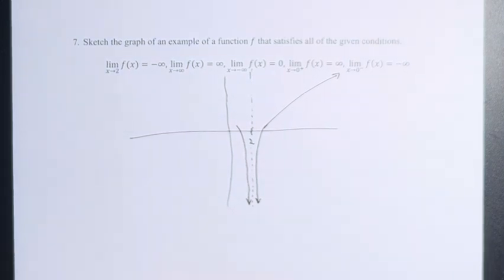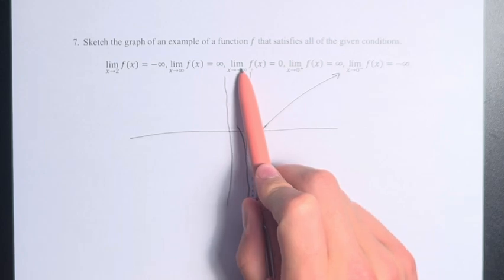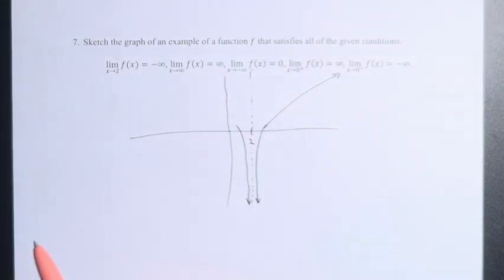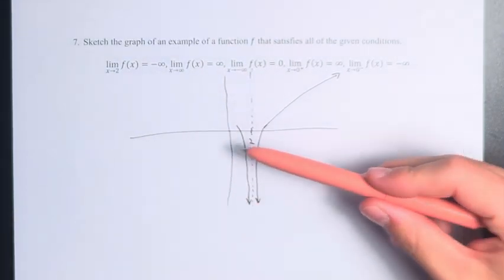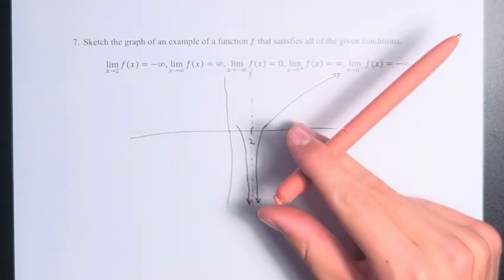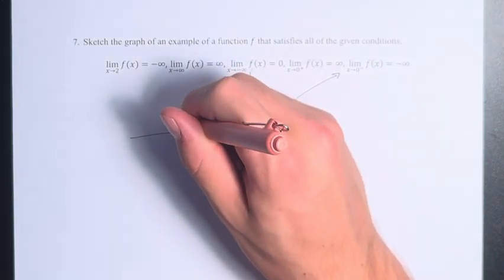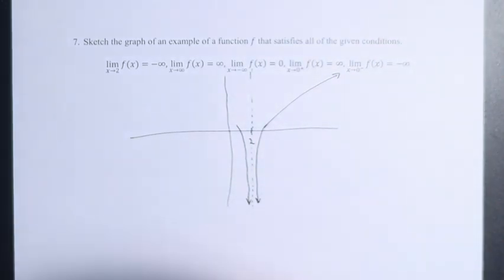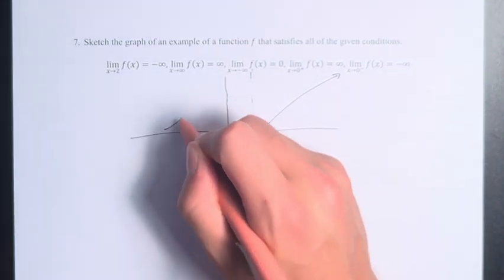We have the limit as x approaches negative infinity is equal to 0, right? That means, as we go in the other direction, we're not just going off to infinity. What's actually happening is, let's say we are coming from a value like this, right?